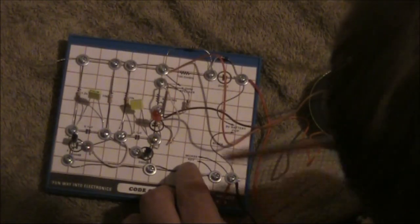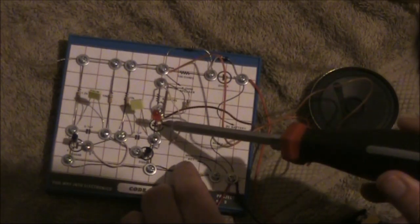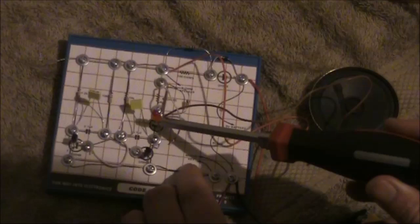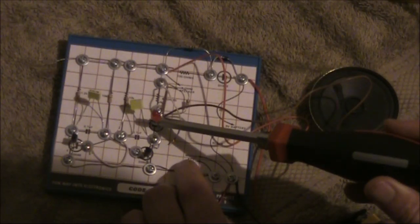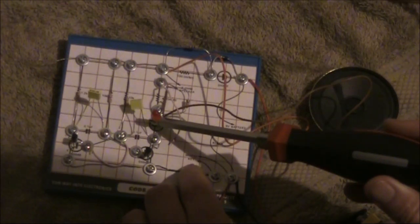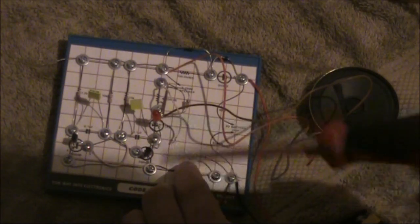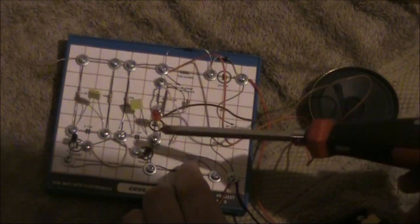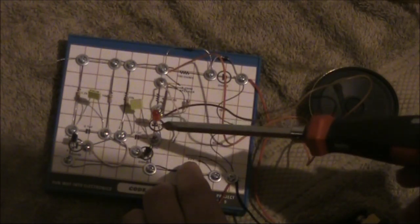Also, I'll just try leaving the 47 ohm resistor in and just bridging the LED. So, if your budget was really limited, then you could get away without having the LED in the circuit.